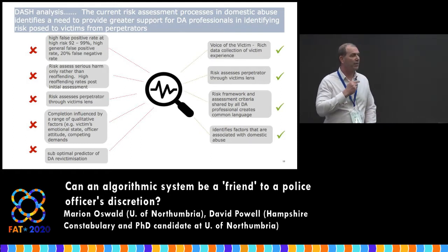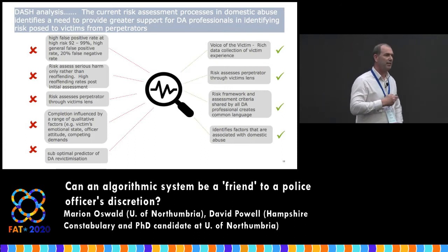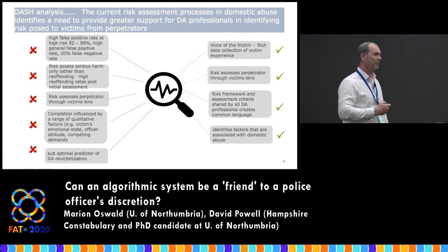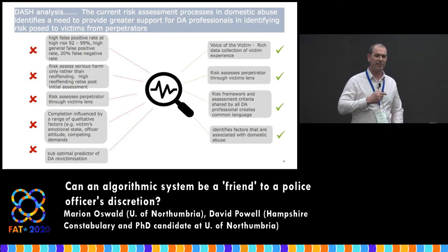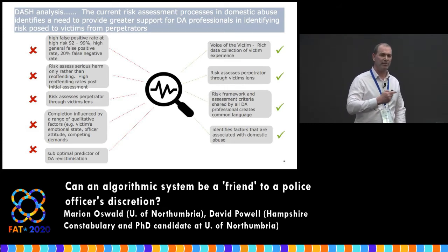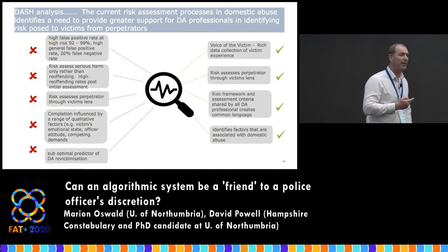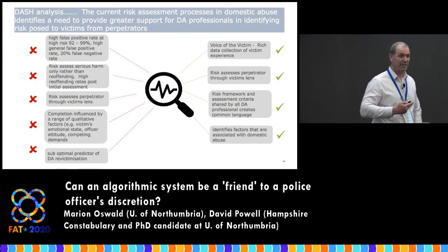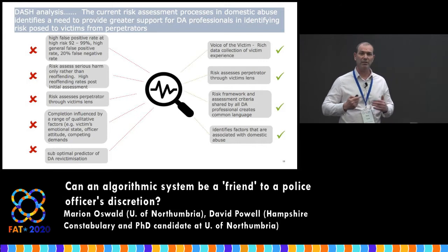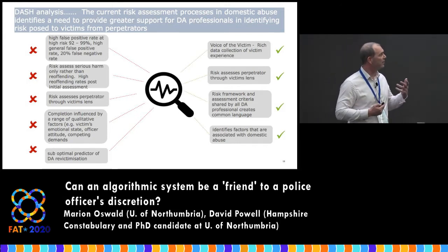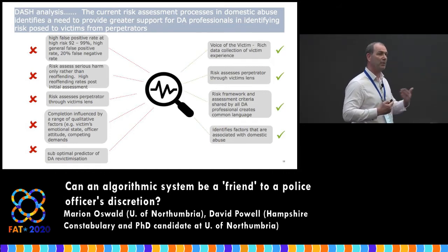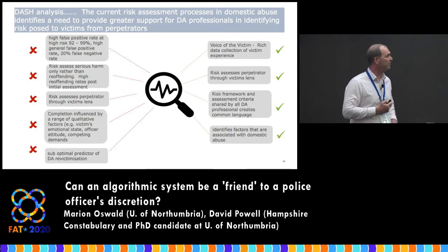One could argue the reason harm never happens is other agencies intervene. But when you consistently see 90 to 99 percent false positive rates reported around the country, you have to question whether we're over-risk-assessing. The tool only assesses serious harm — it doesn't assess the risk of re-offending. The entire thing is designed to risk assess the perpetrator's behaviour through the eyes of the victim, which is important because the victim is your best source of information, but we know it's not always right or independent. Completion of the 27-question assessment is influenced by the victim's emotional state, the environment, and also the officer's attitude to domestic abuse.